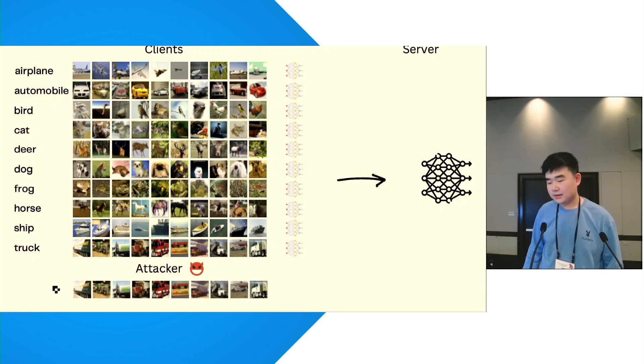In this situation, there's an attacker who adds a trigger, for example, a small pixel pattern to the data set, and labels all of them as an incorrect label, for example, the frog.